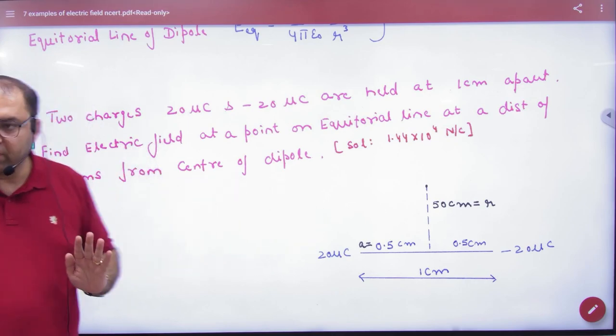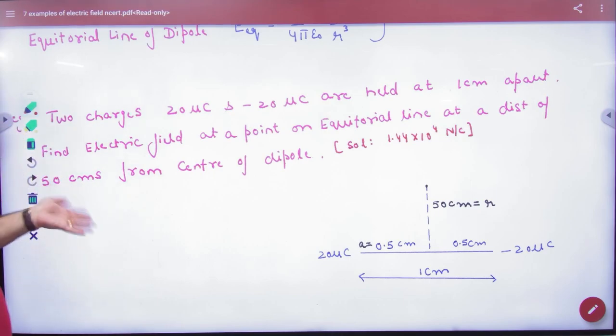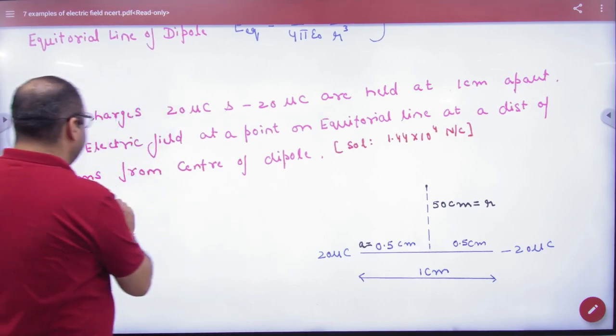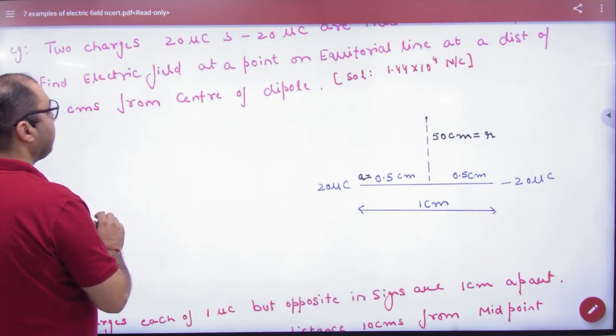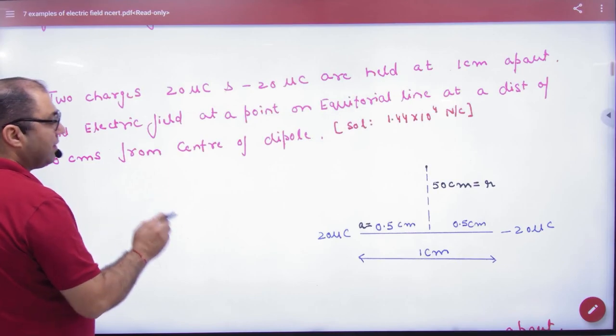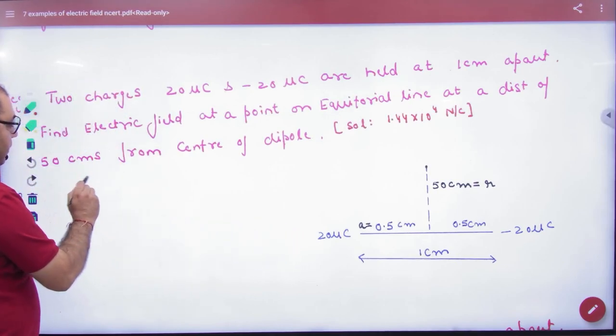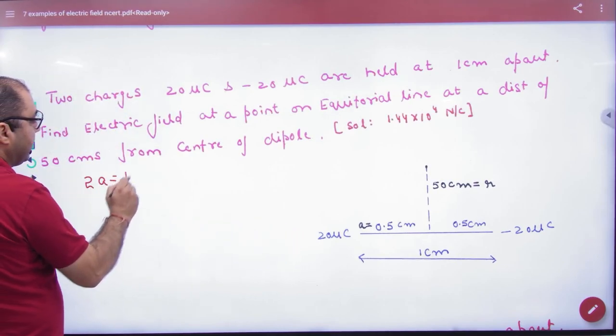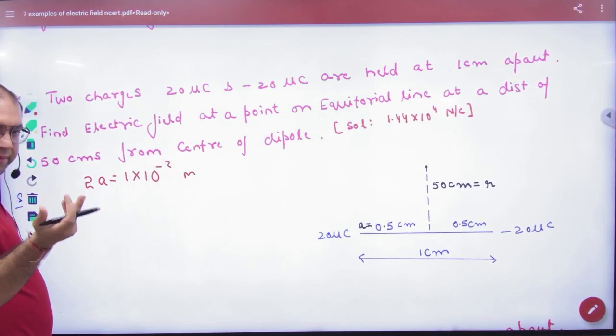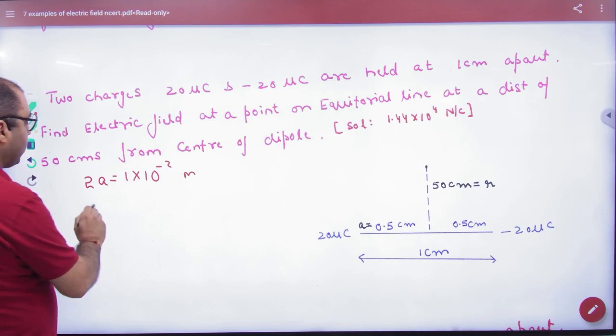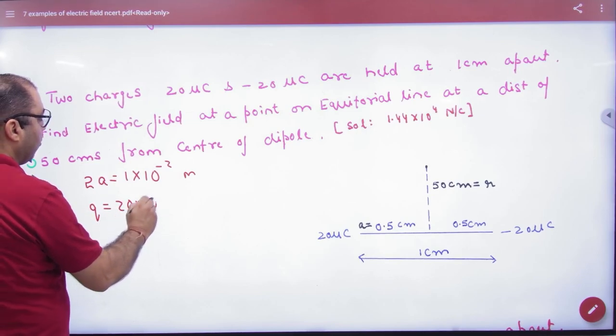So, this is the question. Then, what is given? What does 1 cm apart mean? In the dipole, if we give this statement, they are 1 cm apart, this means that the distance between them is 2a. So, here, 2a value is 1 cm. Something like this. So, a can be calculated if needed. And you have q value given, 20 micro coulombs.